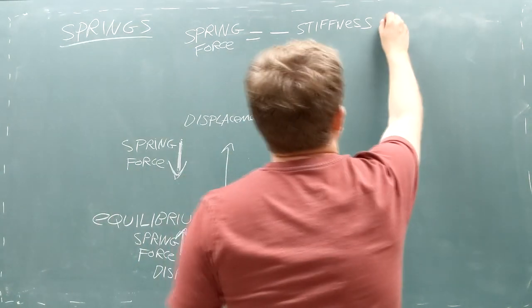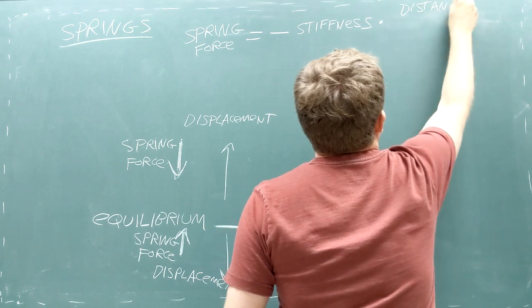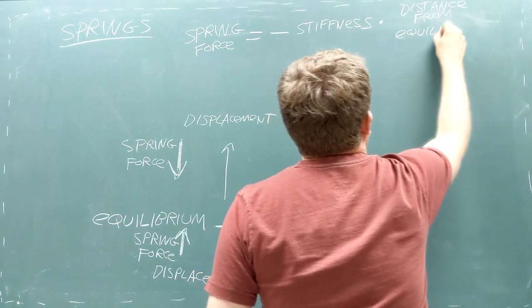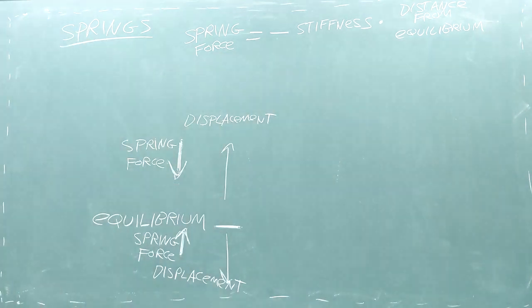Finally, there's the distance the object has traveled from its equilibrium location. You can think of this distance as the amount that the spring has stretched or compressed by.